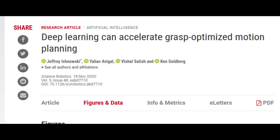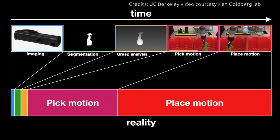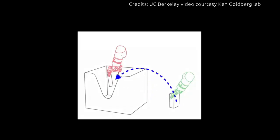Automating warehouse tasks can be challenging because many actions that come naturally to humans, like deciding where and how to pick up different types of objects and then coordinating the shoulder, arm, and wrist movements needed to move each object from one location to another, are actually quite difficult for robots.